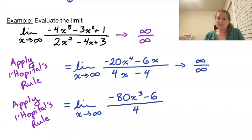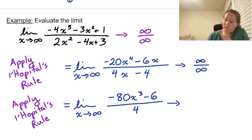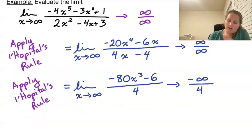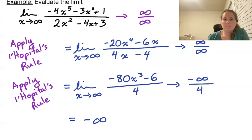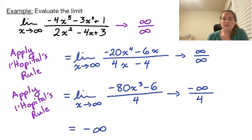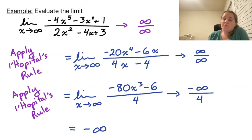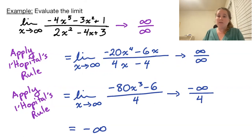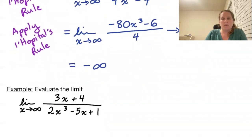This is no longer an infinity/infinity situation. The numerator goes to negative infinity while the denominator goes to 4, so this limit is negative infinity. This is a situation where we applied L'Hopital's Rule a couple of times but didn't wind up with a finite number — we got an infinite limit.